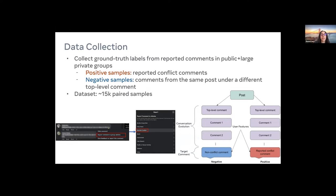For our data collection, we utilize this Facebook conflict comment reporting tool, where group members can report comments to the group admins as a conflict. We collect these reported conflict comments and use these as our positive samples. For each reported conflict comment, we go to the same post and randomly sample a non-conflict comment from a different conversation thread where none of the comments have been reported to the group admins. This gives us a dataset of around 15,000 paired samples of a reported conflict comment and a non-conflict comment, controlled for the same post or topic.